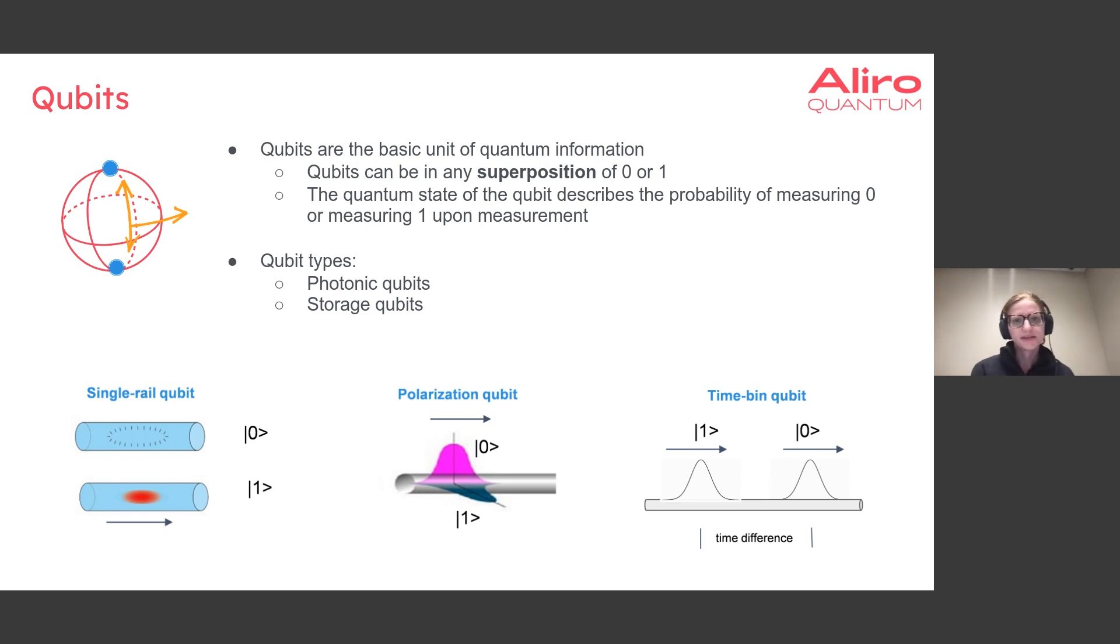The qubit will exist in a superposition until it's measured, and then once it's measured in the basis of zero and one, it will become either zero or one. There are different types of qubits.